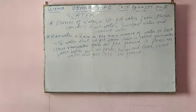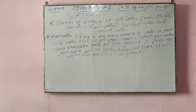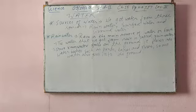So rainwater is what we get from rain. Once rainwater falls on the ground, it flows into water bodies such as ponds, lakes, and rivers. Some water also goes into the ground. Now we move to surface water.